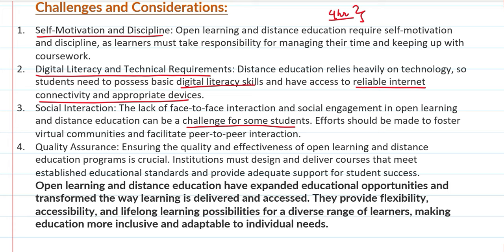Plus, quality assurance. If you are doing a course from a normal university, you can always be sure of its quality. But when you are doing it yourself through open learning or distance learning, it is not always necessary that it is quality and effective. Institutions in traditional settings are properly designed and deliver the course properly, but in open and distance learning, quality assurance is not always guaranteed.